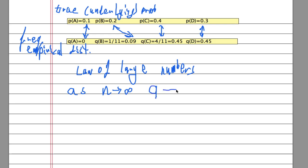Okay, so basically if we do this enough, if instead of 11 here we do this 11,000 times, then the difference between the Q for B and P for B would be very small, and the same for A, C, and D. Okay, so that's basically the main thing that we do.